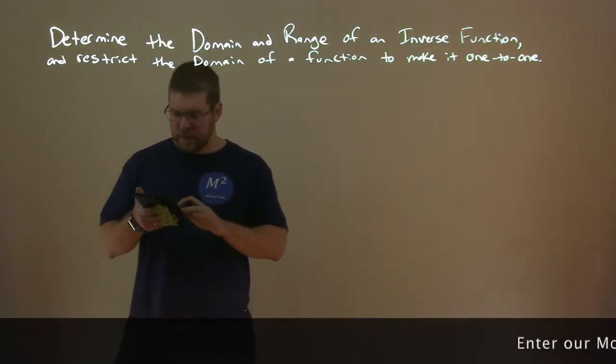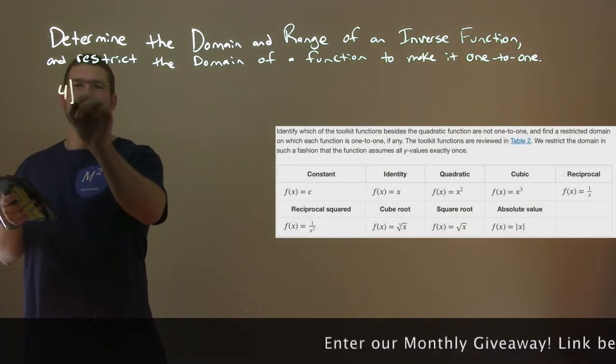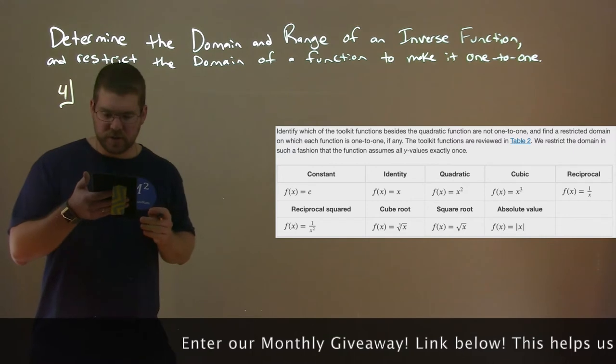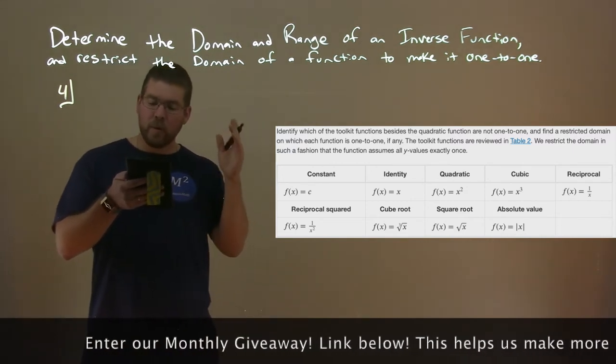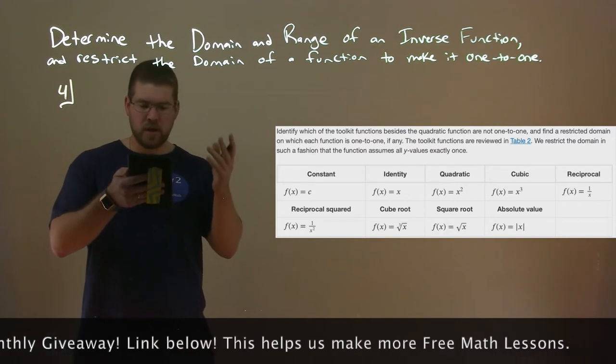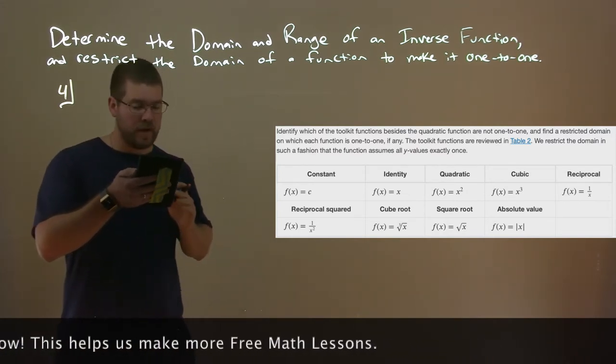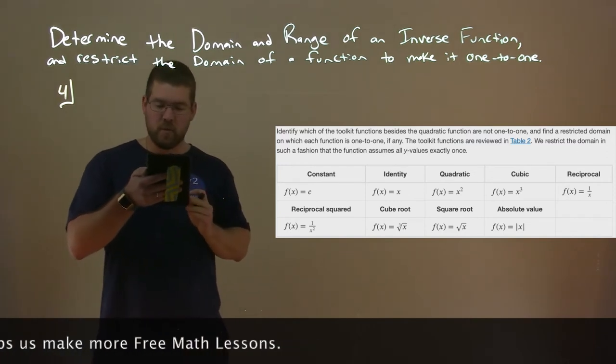Here we have our example, number four. We see all the toolkit functions there. We want to identify which of the toolkit functions, besides the quadratic function, are not one-to-one, and find a restricted domain on which each function is one-to-one, if any.